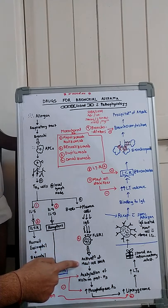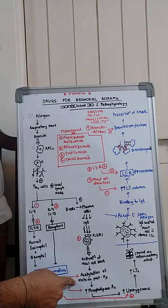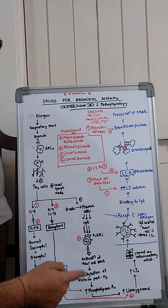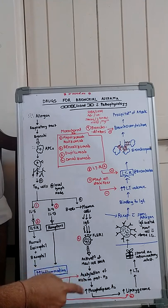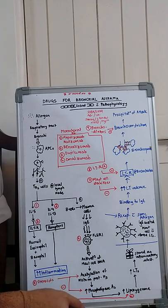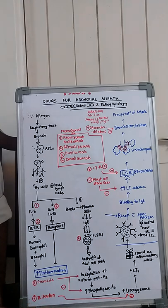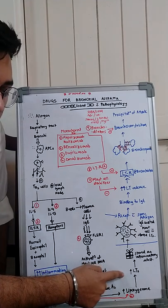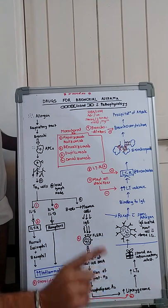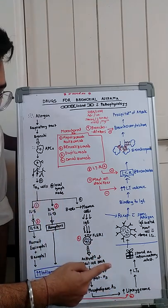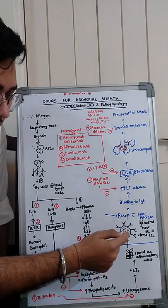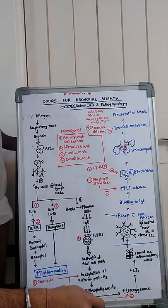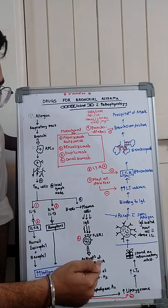Binding of the antibody to the receptor leads to activation of the mast cell DNA. This causes acetylation of histone protein H3, which increases production of phospholipase A2. Phospholipase A2 plays a key role in the prostaglandin and leukotriene pathway. Increased phospholipase A2 leads to increased lipoxygenase, which leads to increased formation of leukotrienes — stored as granules inside the mast cells.